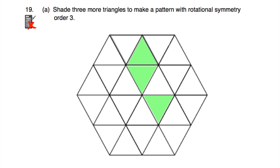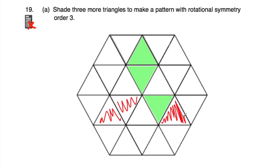Question 19a: we've got a grid with triangles and three triangles are already shaded. We need to shade three more triangles to make a pattern with rotational symmetry order 3. Shading in three specific triangles means spinning the shape through 360 degrees it lands on itself three times — once, twice, three times. So we've shaded three more triangles and made a pattern with rotational symmetry order 3.